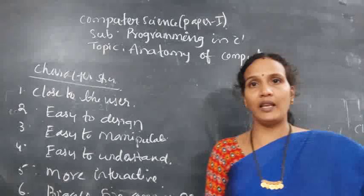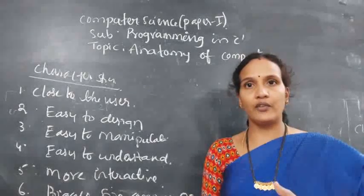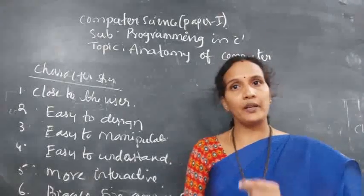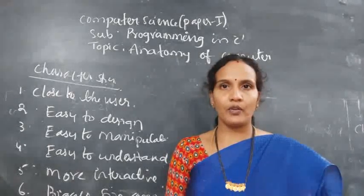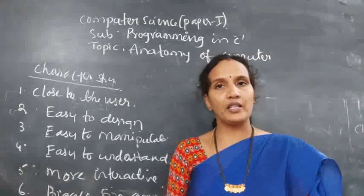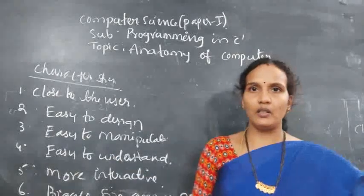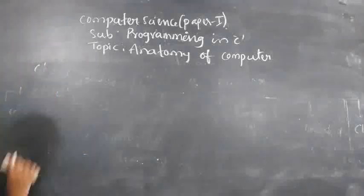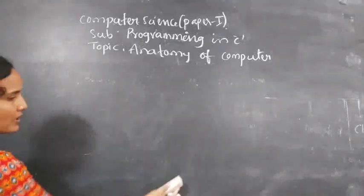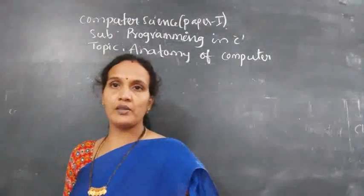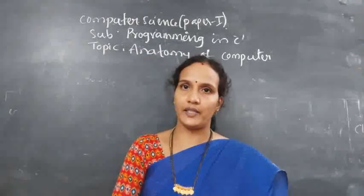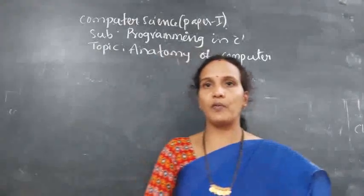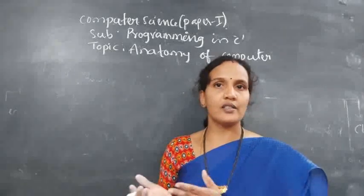In the exam, they may ask you to differentiate between system software and application software. System software is designed to operate the system; application software is designed to perform a specific task. System software size is small compared to application software. Application software size is bigger compared to the operating system. Use whatever key points have been given to write as a difference.